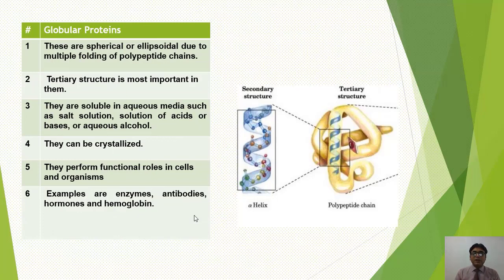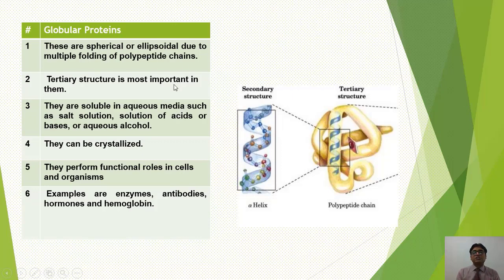दूसरी हैं globular proteins। Globular proteins ellipsoidal या spherical form में होती हैं - spherical मतलब rounded और ellipsoidal मतलब oval shape। ये globular proteins इस form में इसलिए होती हैं क्योंकि alpha helix में multiple folding होती है जिससे proteins rounded shape में आ जाती हैं। इनमें tertiary structure होता है क्योंकि globular structure tertiary structure ही होता है। ये globular proteins aqueous medium में soluble होती हैं - salt solution में, acids और bases के solutions में, और aqueous alcohol में भी dissolve हो जाती हैं।